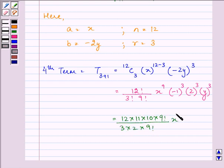We have x^9, (-1)^3 means -1 itself, 2^3 means 8, and y^3.